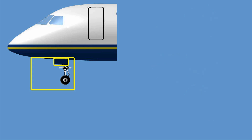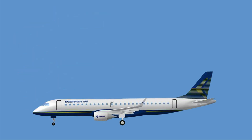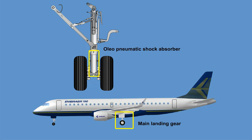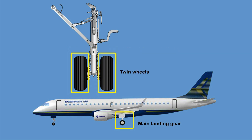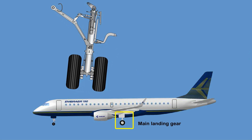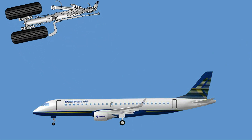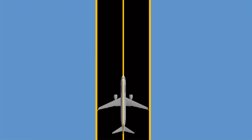When the nose landing gear is extended, the rear doors remain open while the front doors reclose after extension or retraction. The main landing gears also have oleo-pneumatic shock absorbers and twin wheels and retract sideways. With a full deflection of the nose wheel, the aircraft can theoretically turn on taxiways as narrow as 22 meters (71 feet).